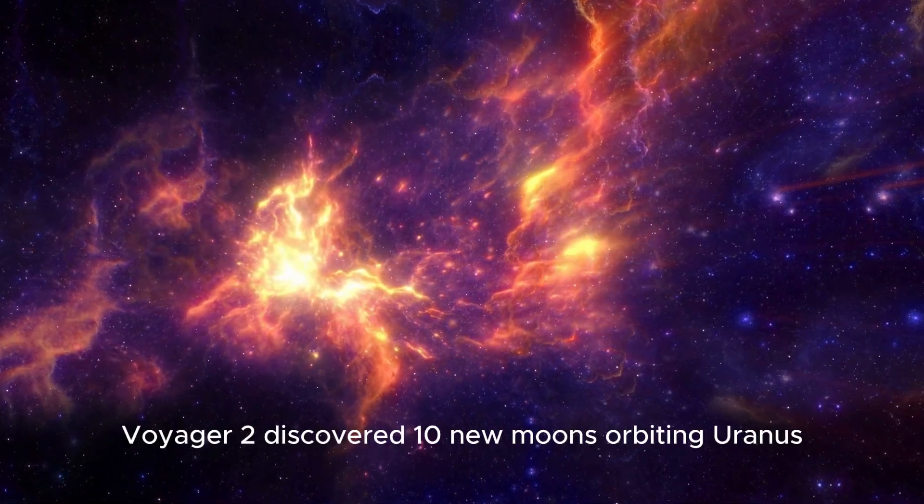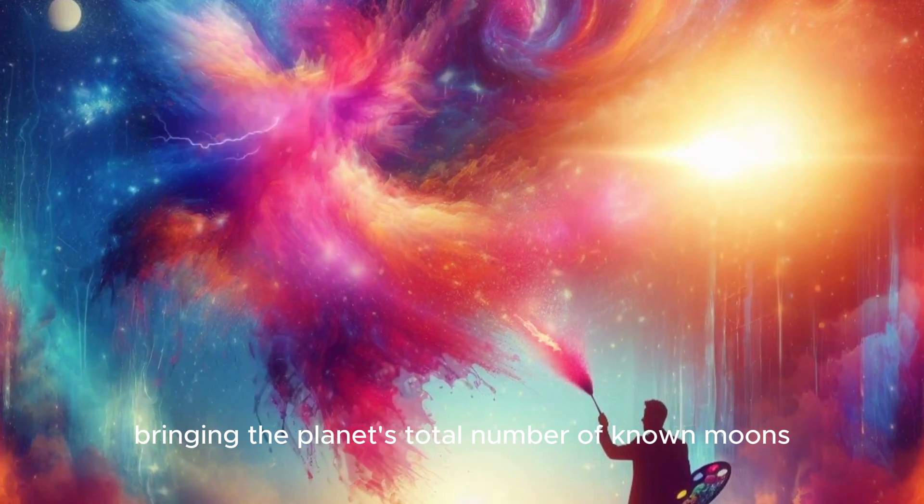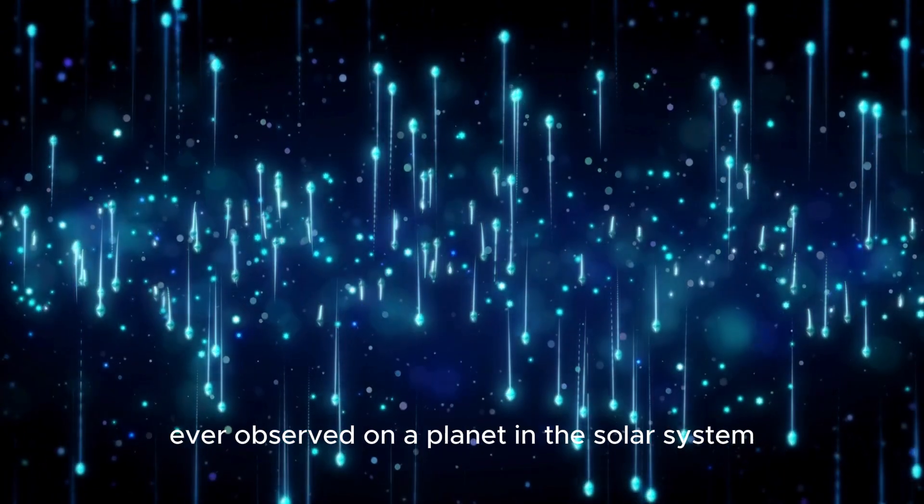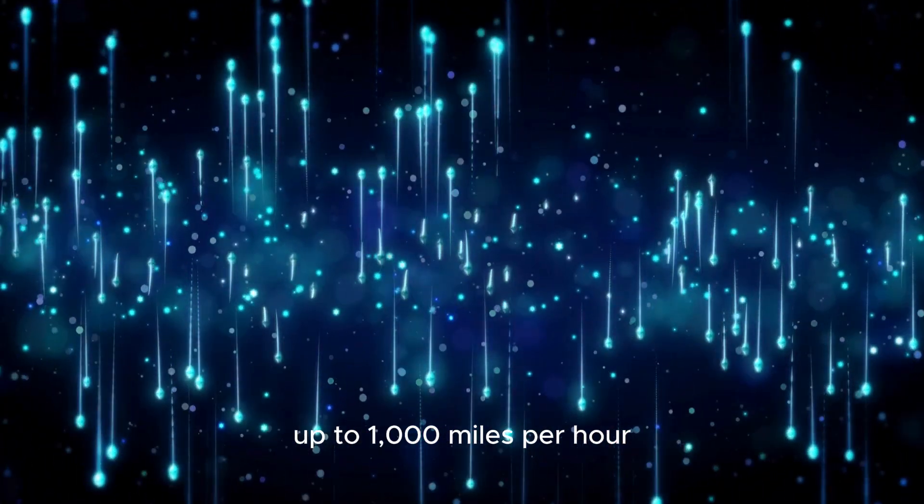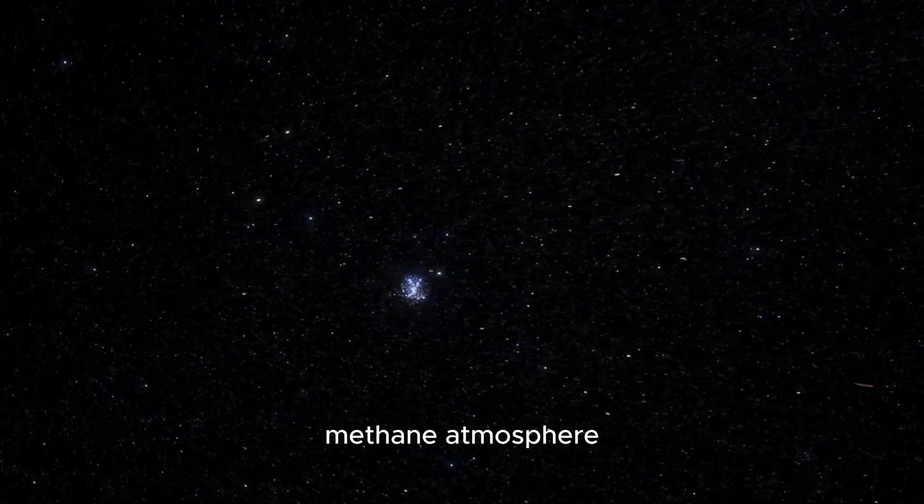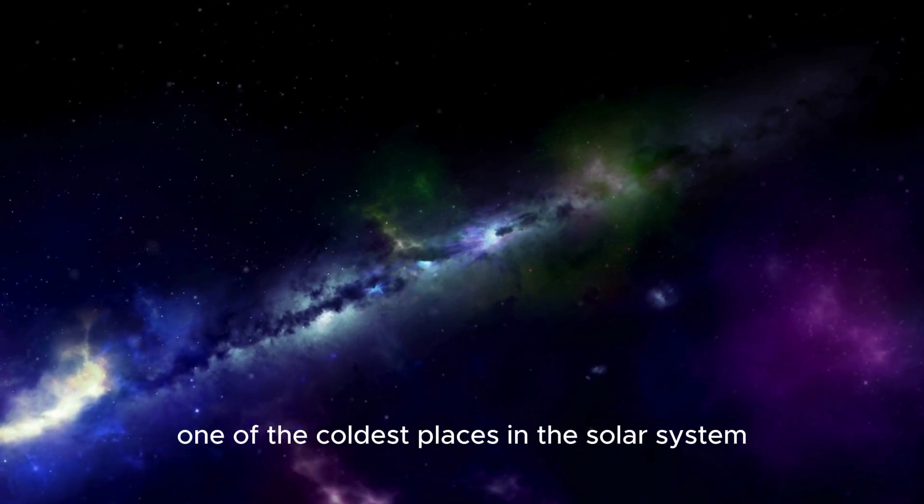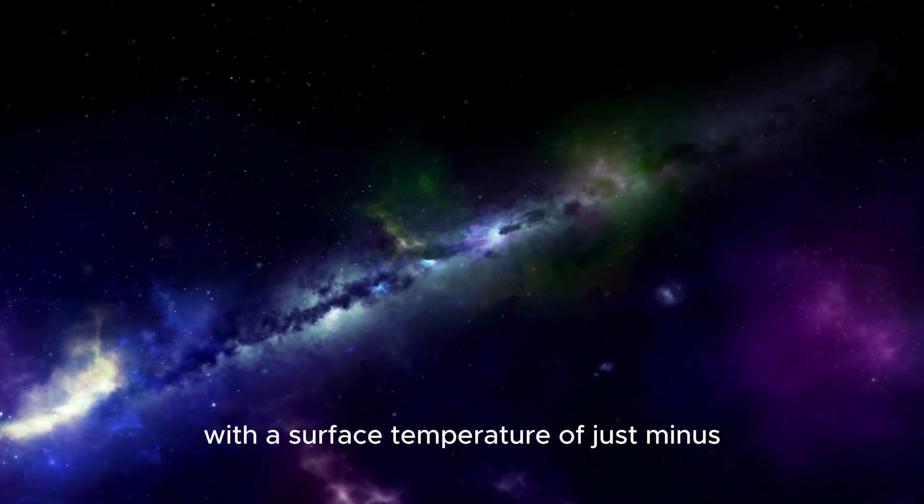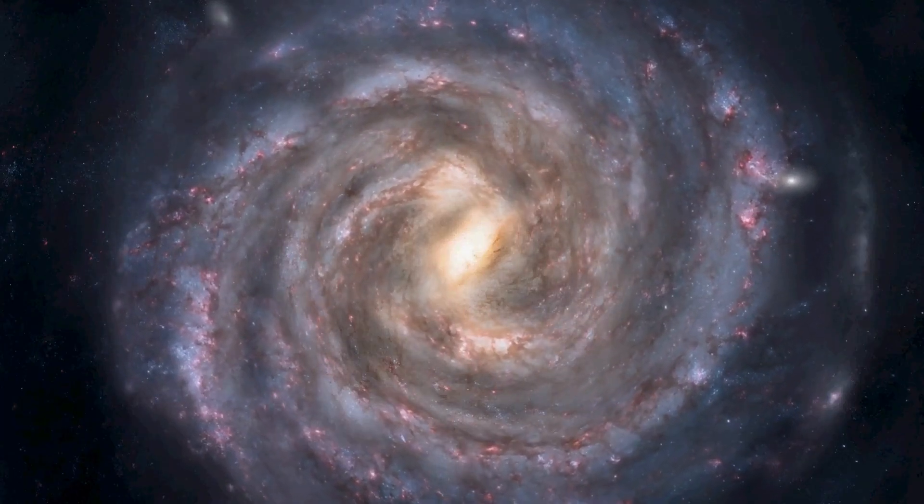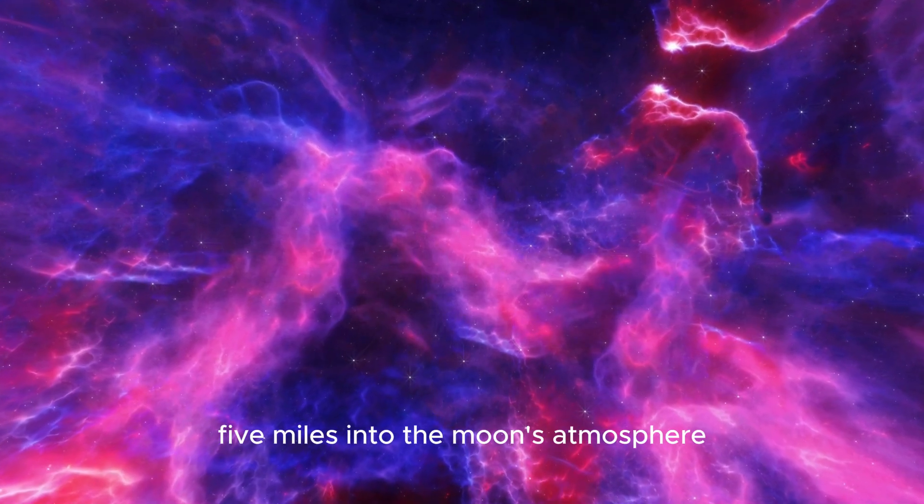In 1986, Voyager 2 discovered 10 new moons orbiting Uranus, bringing the planet's total number of known moons to a growing count. Three years later, it recorded the fastest wind speeds ever observed on a planet in the solar system, up to 1,000 miles per hour, while flying about 2,980 miles above Neptune's azure methane atmosphere. Triton, Neptune's largest moon, was found to be one of the coldest places in the solar system, with a surface temperature of just minus 391 degrees Fahrenheit, minus 235 degrees Celsius. Ice volcanoes on Triton expelled nitrogen gas and powdery particles five miles into the moon's atmosphere.